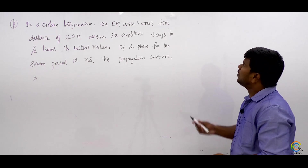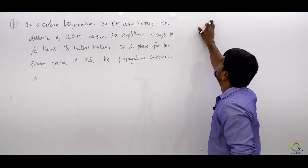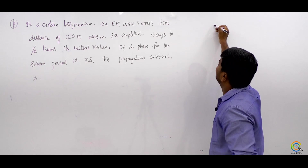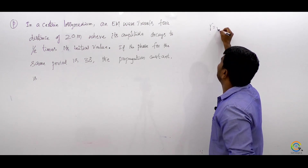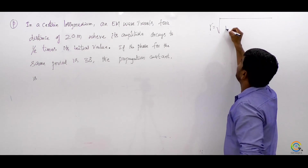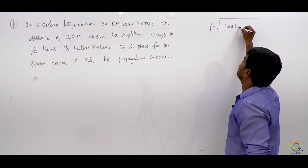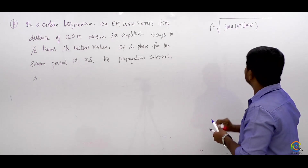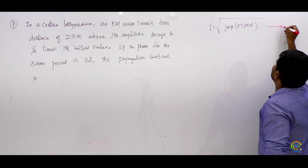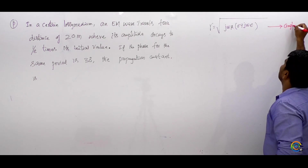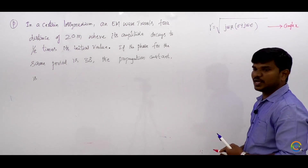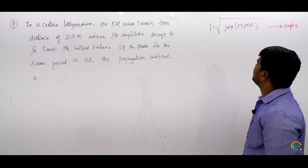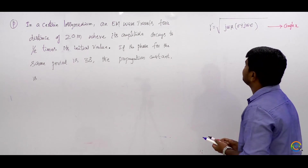What is the propagation constant expression? Gamma equals root over j omega mu times (sigma plus j omega epsilon). It is generally a complex value: j omega mu times (sigma plus j omega epsilon).